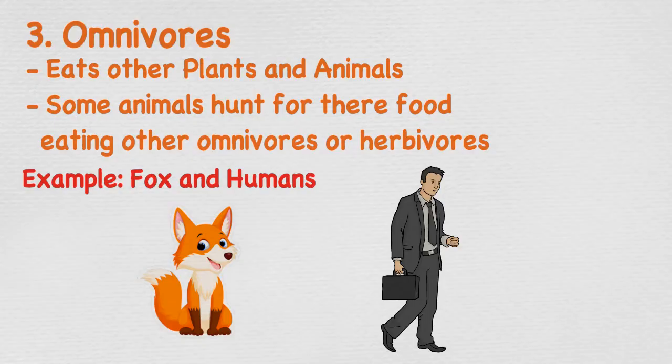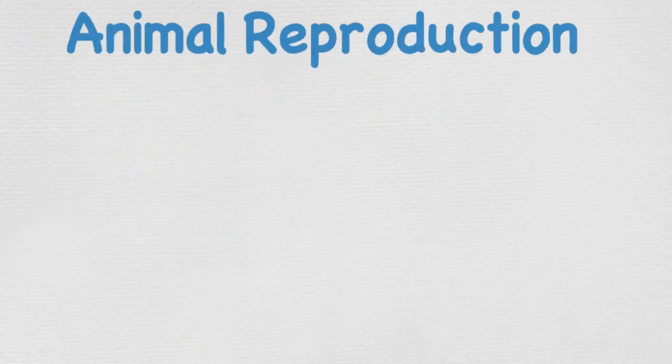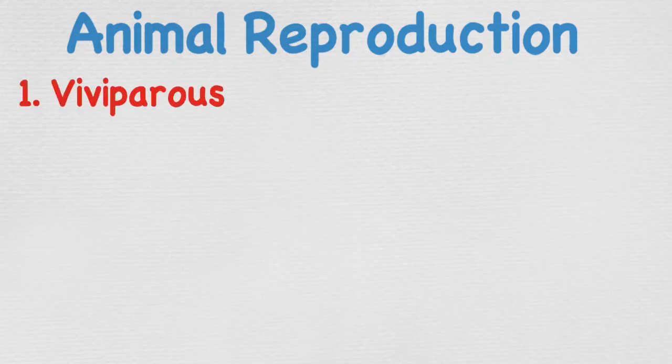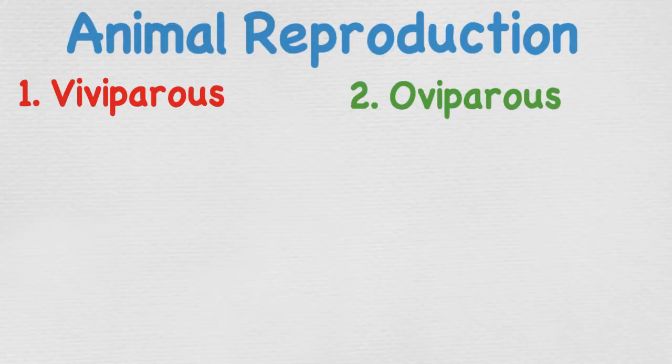Now we are going to look at how animals can be born and how this is used to classify them. There are two types of reproduction in animals: viviparous and oviparous.